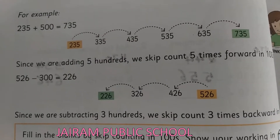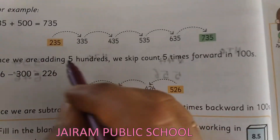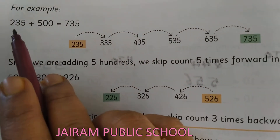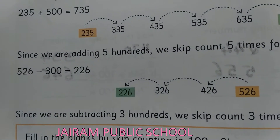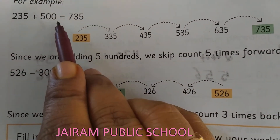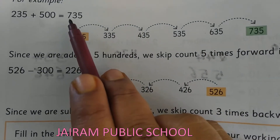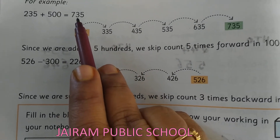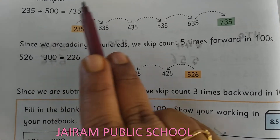Now see here Kanna — take your book, page number 28. See one example they have given: 235 plus 500. So they have added the number 500. See what answer came: 735. So you want to skip forward 5 times.